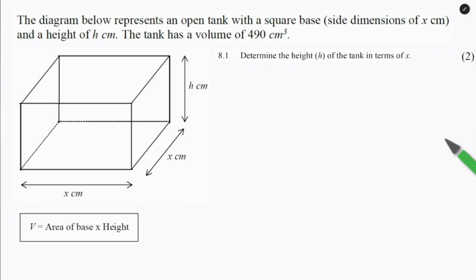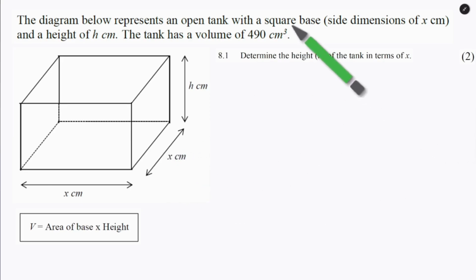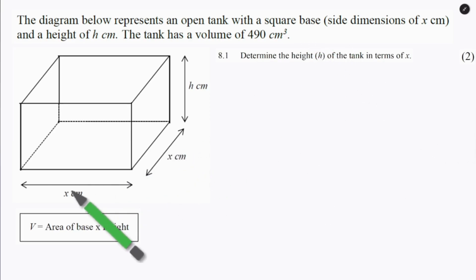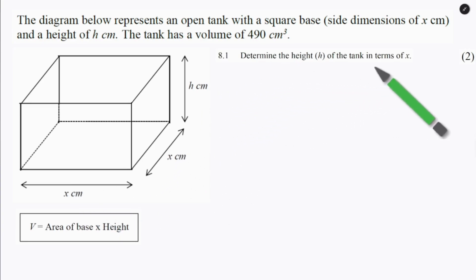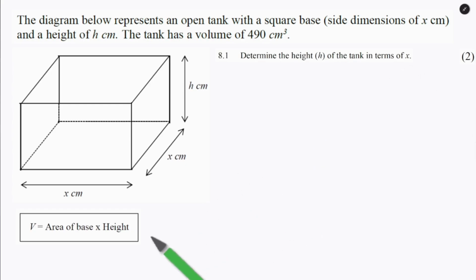Starting off with question 8.1, we jump into our measurement. We have been given a square-based prism with x, x, and h as our dimensions. We need to determine the height of the tank in terms of x, and we are going to be utilising the formula they gave us to do that.